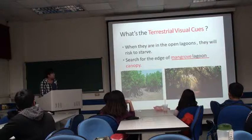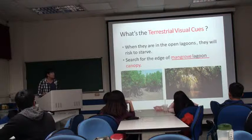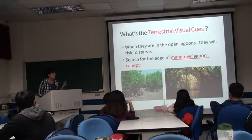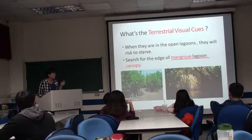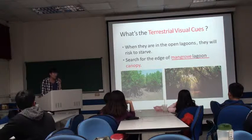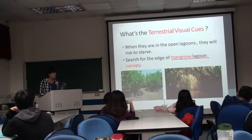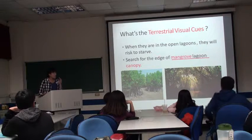Second, what are terrestrial visual cues? Terrestrial means it comes from the land, not from the water. Box Jellyfish are not found in open lagoons because there they risk starvation. The visual information is used to search for the edge of the mangrove lagoon canopy. Mangrove is a plant that lives in the intertidal zone. A lagoon is sheltered water separated by barrier islands. So the terrestrial visual cue is the edge of the mangrove lagoon canopy.